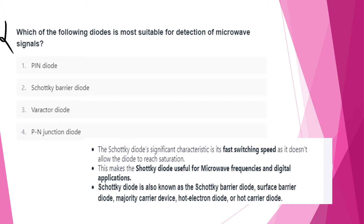Which of the following diodes is most suitable for detection of microwave signals? The answer is the Schottky barrier diode. This diode is known for its fast switching speed, and we use it in microwave frequency applications. Its other name is the Schottky barrier diode.